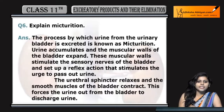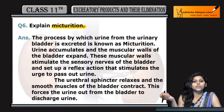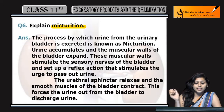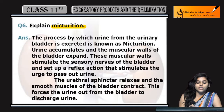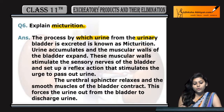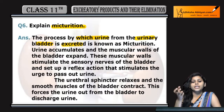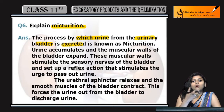Question number 6: Explain Micturition. Micturition kia hota hai — urination kia hota hai. The process by which urine from the urinary bladder is excreted — us process ko bolte hai micturition. Jis process se urine ka passage hota hai out of the urinary bladder.